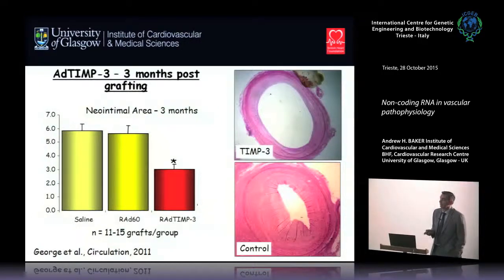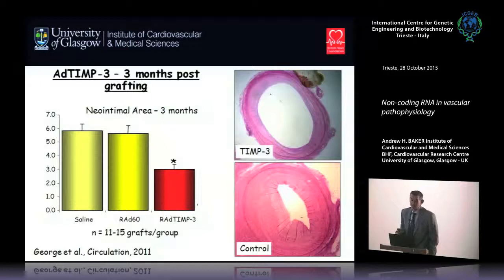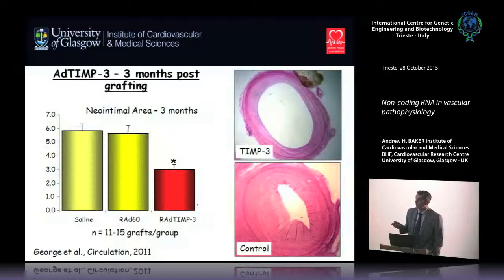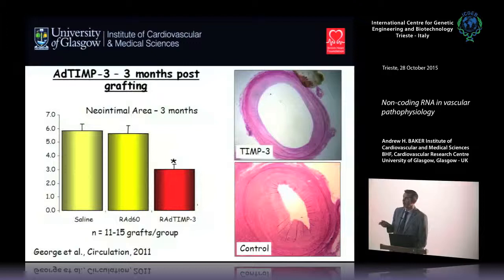TIMP3 has multiple effects: it blocks MMPs and induces cell death at high doses by blocking ADAMs. In a key dataset from long-term studies in a large number of pigs, TIMP3 overexpression blocks neointima formation by about 50% at three months post-grafting — very similar to what's seen in patients — which would translate to a large clinical benefit. Importantly, the control virus without TIMP3 had no positive or negative effect, and this protection persists even after the virus has disappeared.